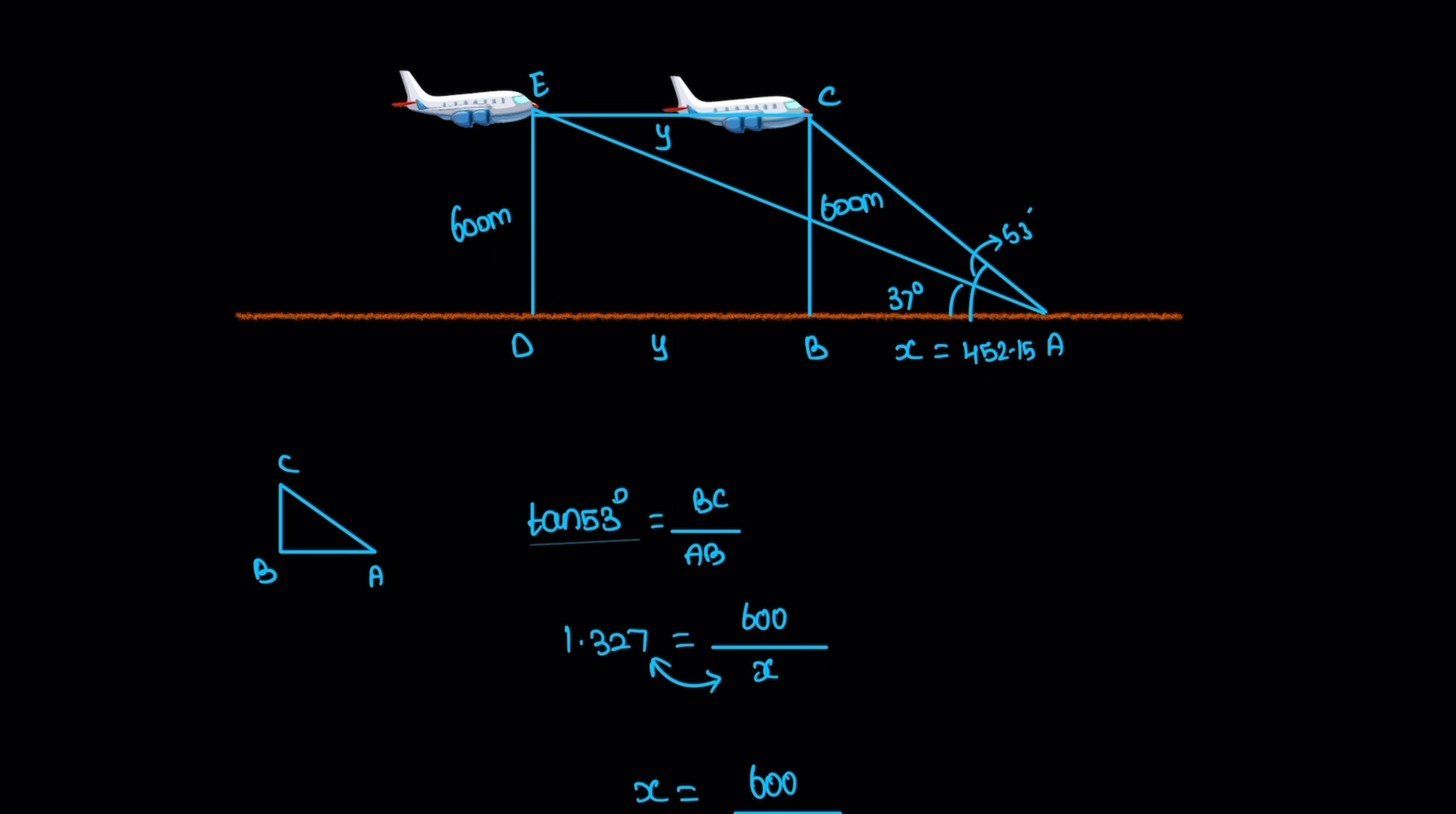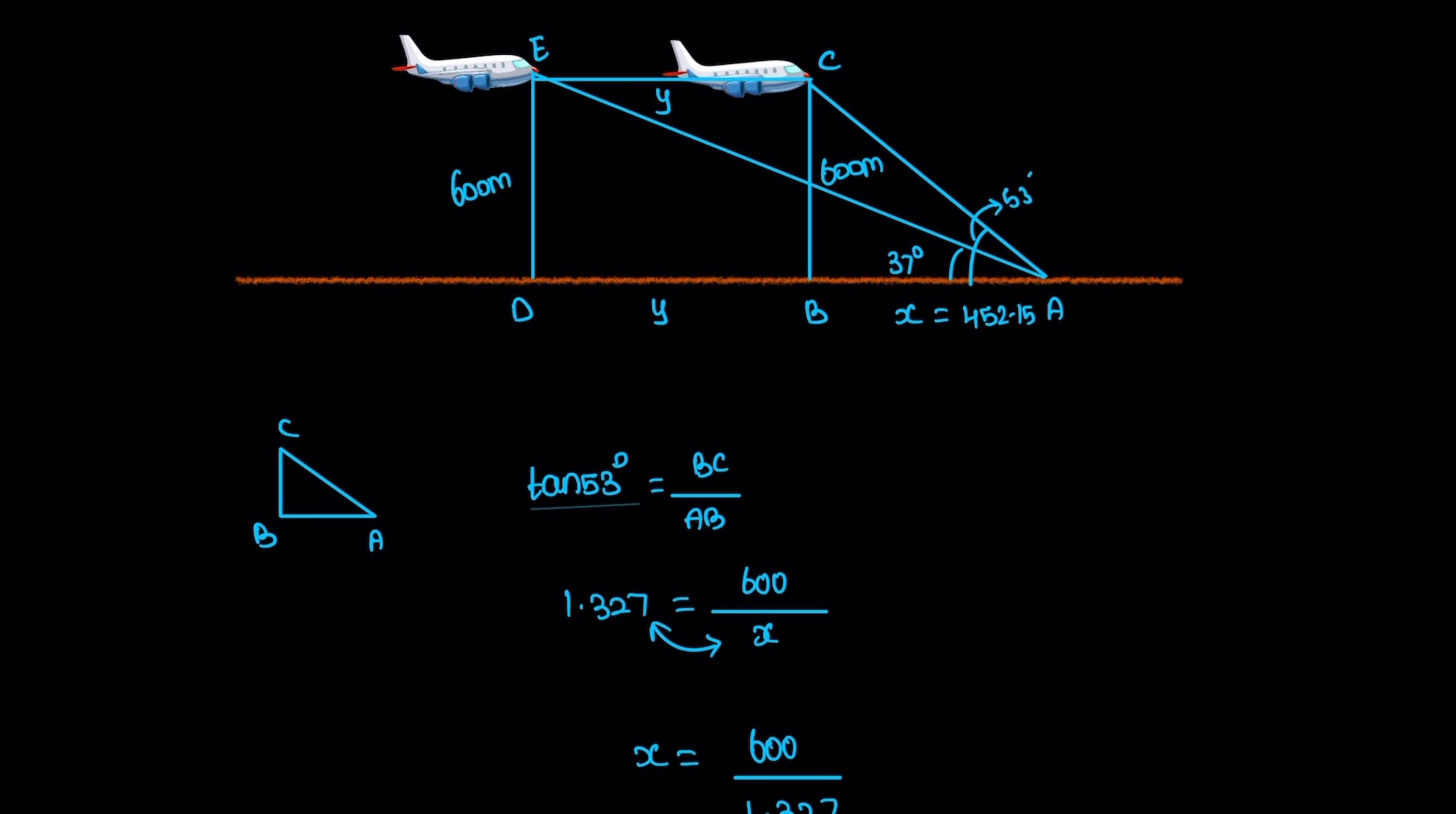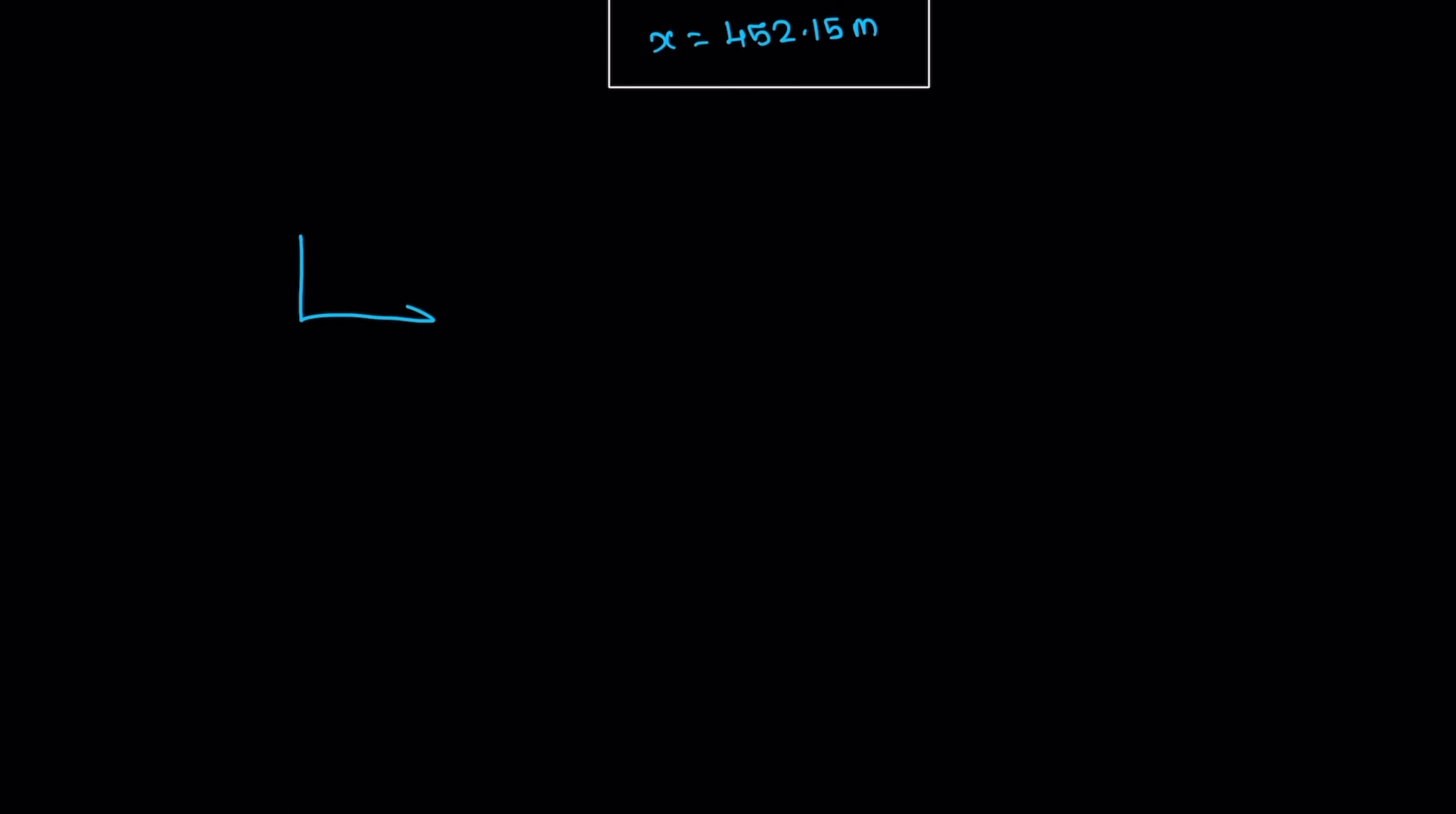Now for Y. In triangle ADE with the larger angle, tan 37 equals DE divided by AD. DE is 600 meters, and AD is X plus Y. Tan 37 from the question is 0.7536, equals 600 divided by X plus Y.